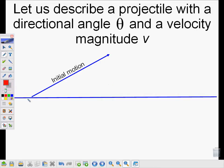Let us also describe this projectile with a directional angle called theta. So this right here, this is theta. And a velocity with a magnitude of v. So here we have our initial motion. We're going to describe it with an angle theta, and we measure that angle to the horizontal plane here. And we will have a magnitude for this motion of a velocity v.